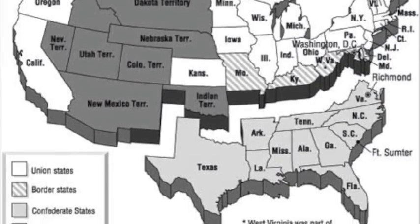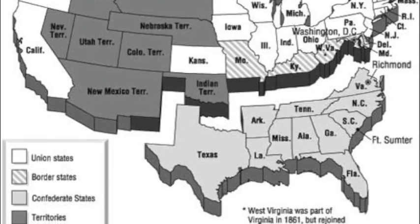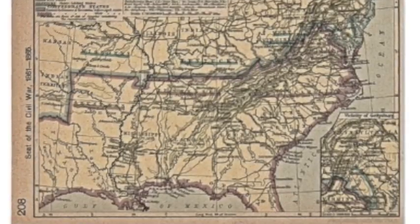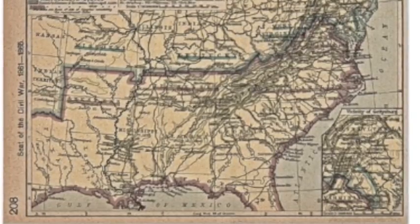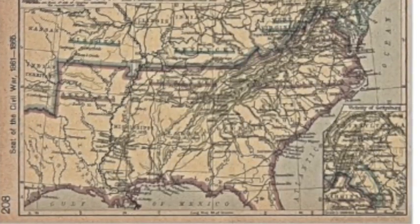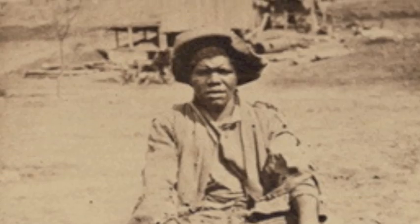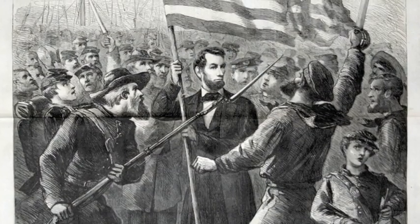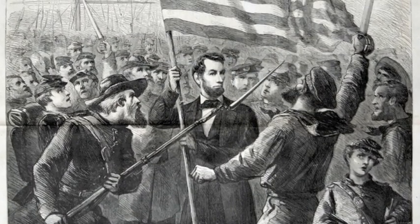The Civil War was a war between the northern United States and eleven southern Confederate states that left the Union. It was fought from 1861 through 1865 and was the bloodiest war that America had been involved in. Several causes of the Civil War include controversy about slavery, the election of Abraham Lincoln as President of the United States, and Western expansion.